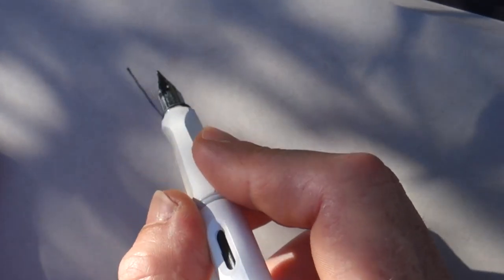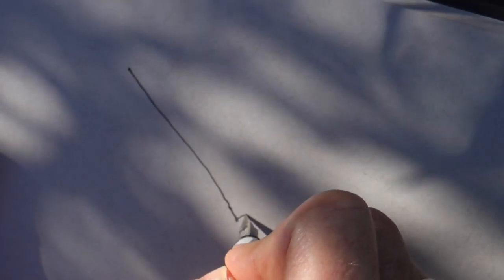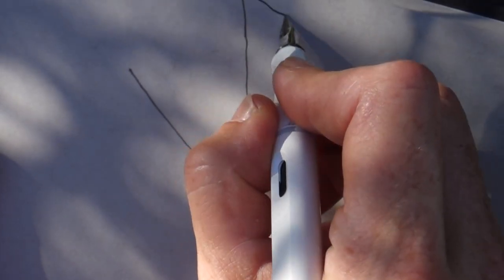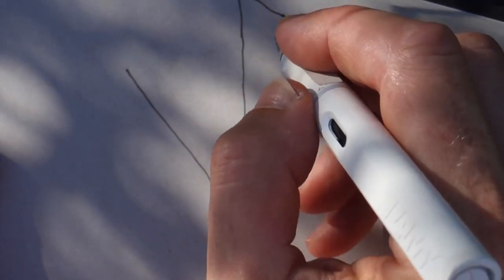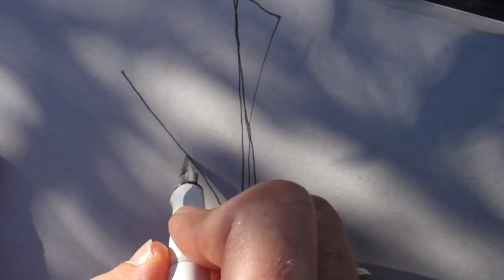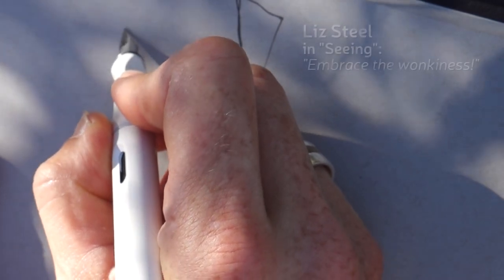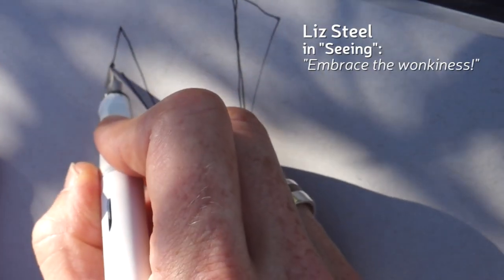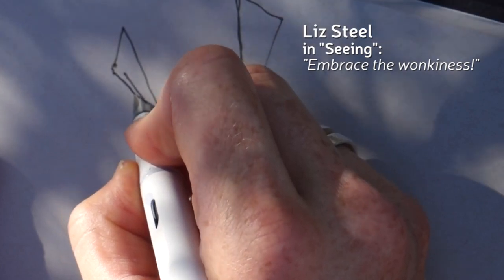The surface my sketchbook is on is the front of my bicycle, at the top of my bicycle basket—not ideal and a bit wobbly. But as Liz Steele says in Sketchbook School's course, I'm not going to worry about it, and I will embrace the wonkiness. It'll be adding character and personality to my drawing in the end.